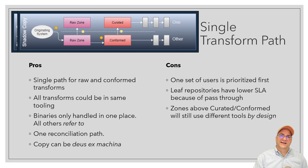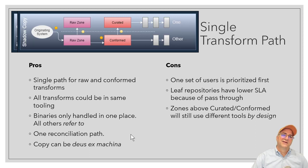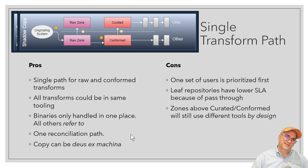If you have secondary and tertiary zones — like presentation and machine learning — those transforms would be custom for those zones, kind of like custom views. What are the pros of this path? Single path for raw and conformed, so you only have one set of transforms. You know they're going to be the same, and you don't have to audit that those transforms were done differently. All complex transforms on your primary path can use the same tooling — you could do it all in SQL.